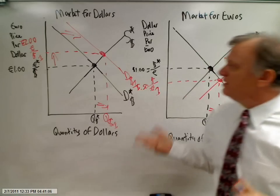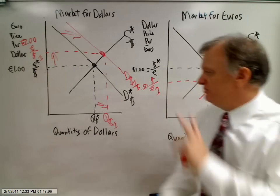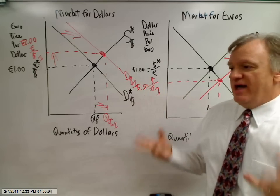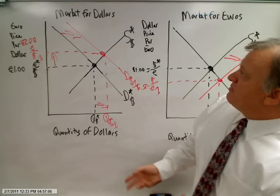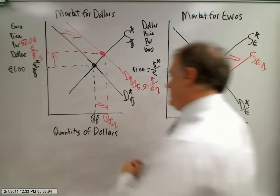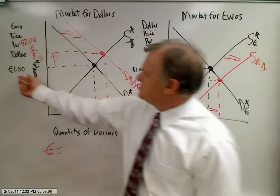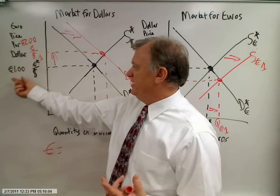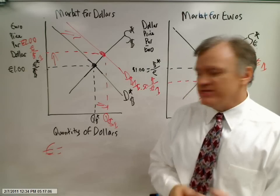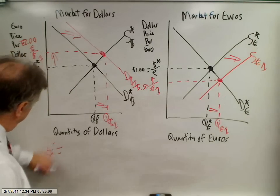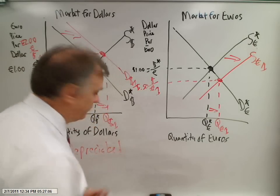What's a European to do? Now it costs them twice as many euros to buy a dollar as it did before. To sum this all up: after the relative interest rate change, U.S. financial assets become more desirable. In the market for dollars, can we say the euro has appreciated or depreciated in value? Well, a European used to only have to give up one euro to buy a dollar; now they have to give up two. My money only buys half of what it bought before. So I can say that the euro has depreciated relative to the dollar.